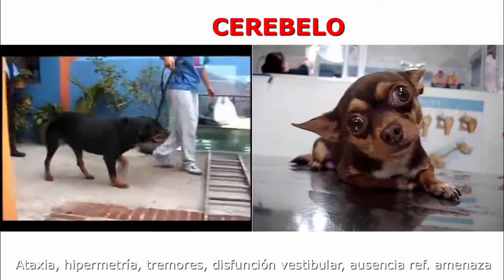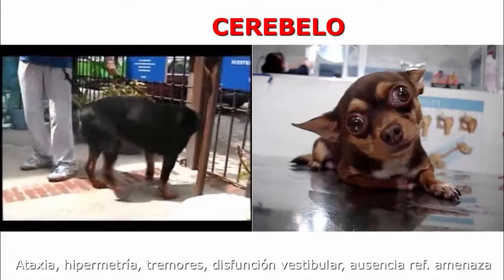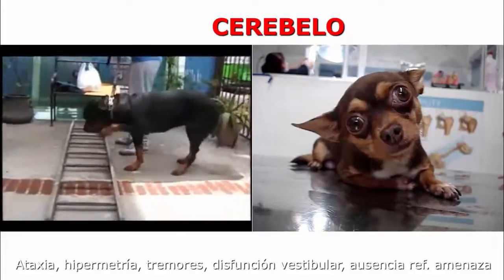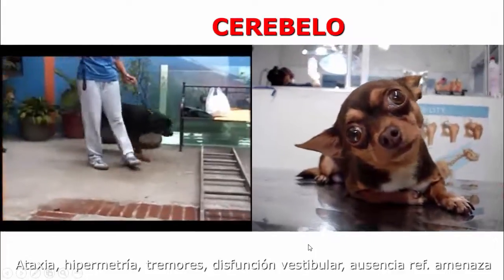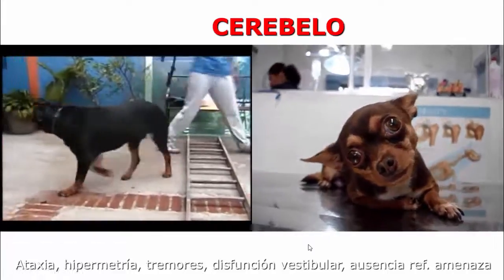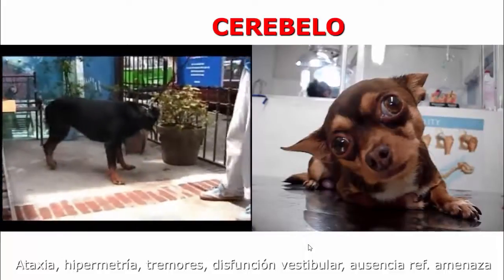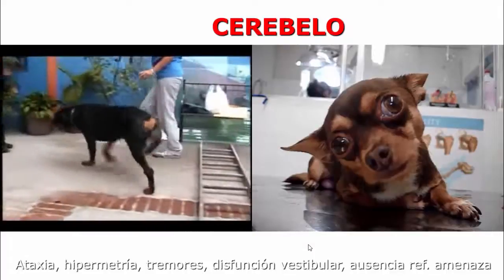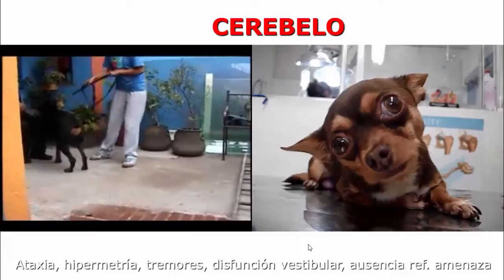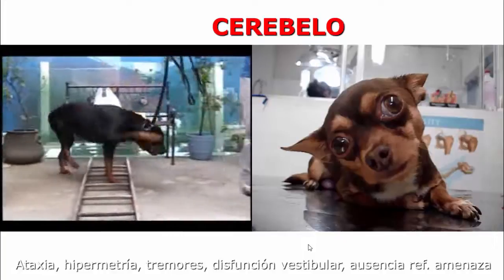Alteraciones en el cerebelo van a ser ataxias e hipermetrías, es decir, movimientos exagerados —como este Rottweiler que casi se agarra cachetadas a sí mismo—. También alteraciones vestibulares, porque el vestíbulo coordina; todo paciente que tiene inclinada la cabeza, con una oreja más cerca al piso que la otra, indiscutiblemente nos llevará al sistema vestibular.